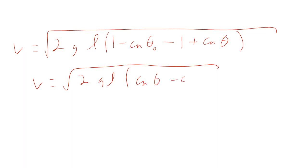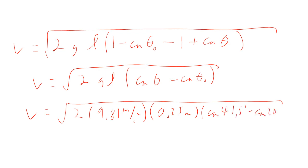So if you put those in, the velocity is the square root of 2G times the H. So that's going to be L times one minus cosine theta, minus the original, so that's minus one plus cosine theta, the final. So the ones cancel. So V is square root of 2GL, cosine theta minus cosine theta naught. So square root of 2 times 9.81 meters per second squared times 0.25 meters times cosine 41.5 degrees minus cosine 20 degrees. And so the velocity is 0.967 meters per second.